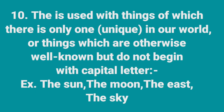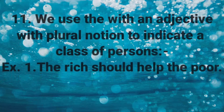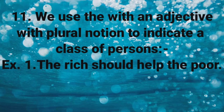Examples of Rule 10: 'The stars in the sky', 'The earth revolves around the sun', 'The sun rises in the east.' Next, we use 'the' with an adjective with a plural notion to indicate a class of persons.